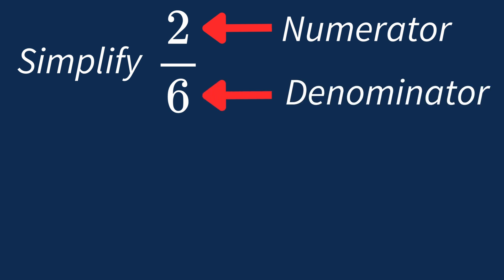A common factor is any number that divides into both numbers evenly. First, let's list out the factors for each number.